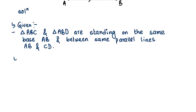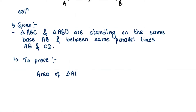Now that we have written our given, the second thing we need to write is what we need to prove. We are trying to prove that the area of triangle ABC and triangle ABD are equal because they are standing on the same base and between the same parallel lines. So we need to prove: area of triangle ABC = area of triangle ABD.